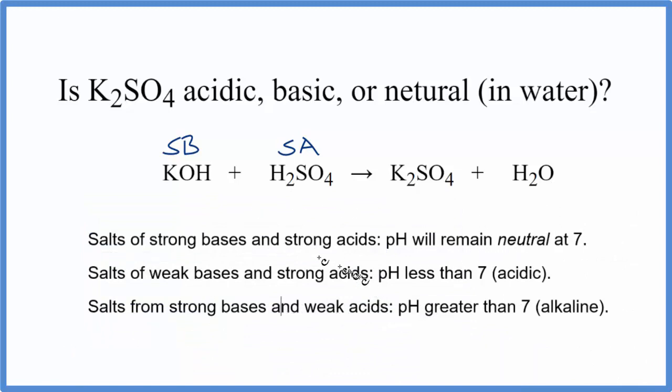According to our rules, if we have a strong base and a strong acid that produces that salt, that potassium sulfate here, the pH is going to be neutral at 7. So in answer to our question,